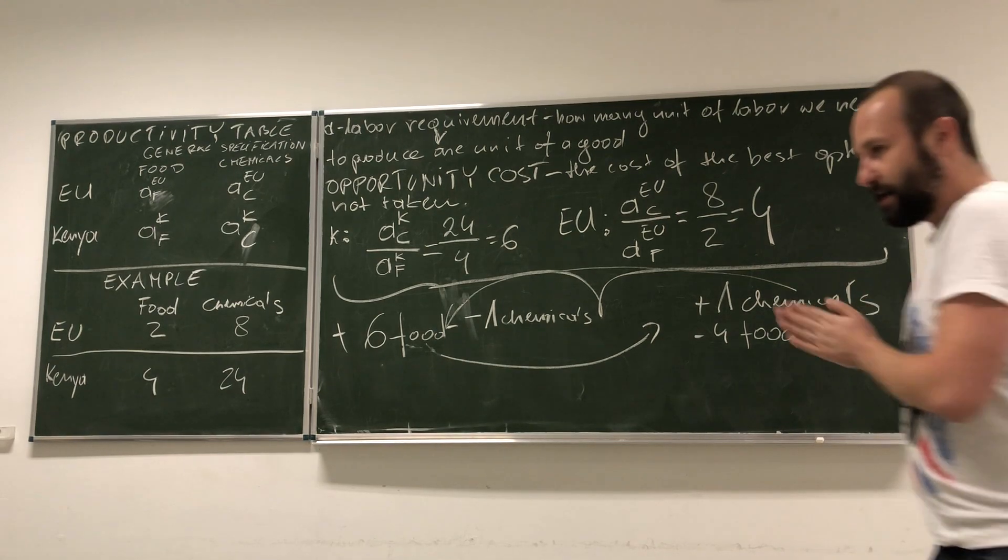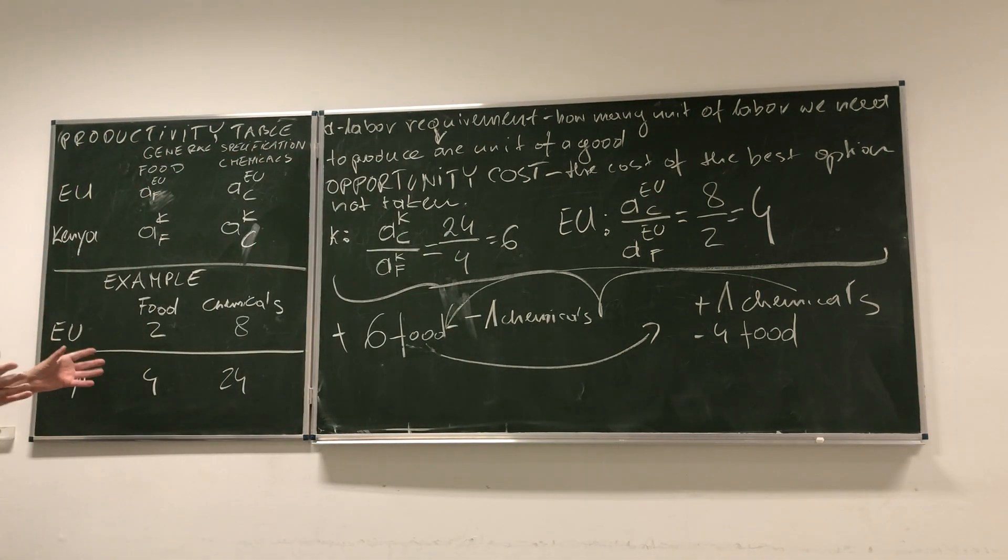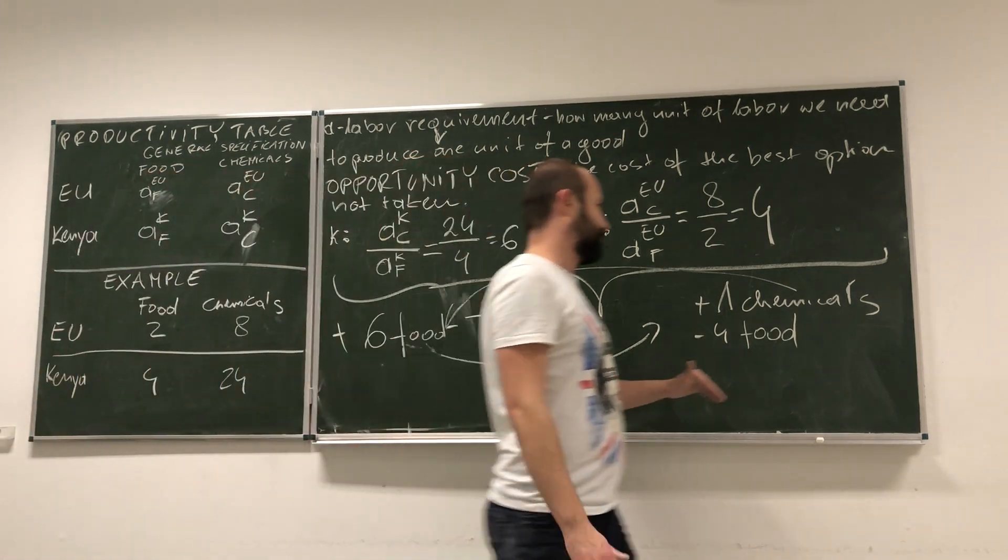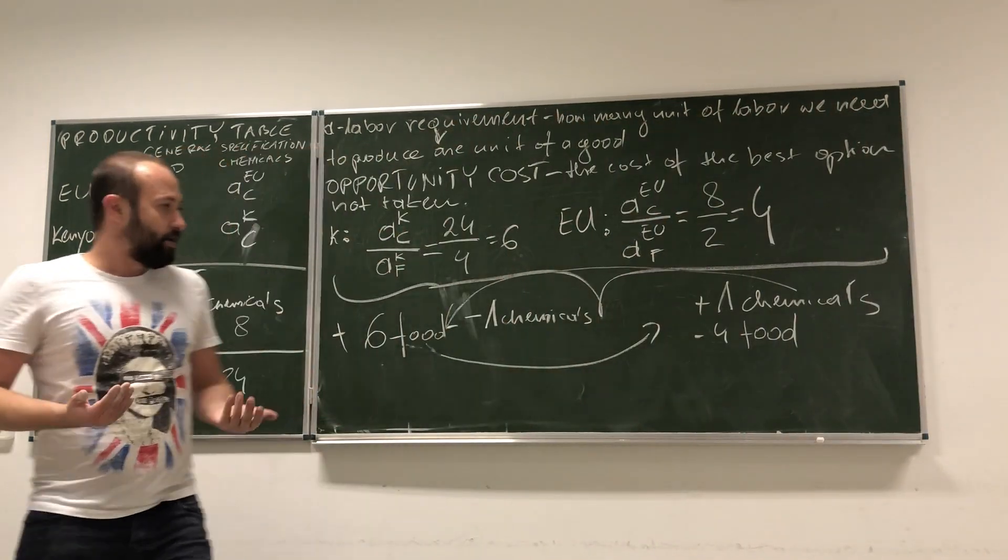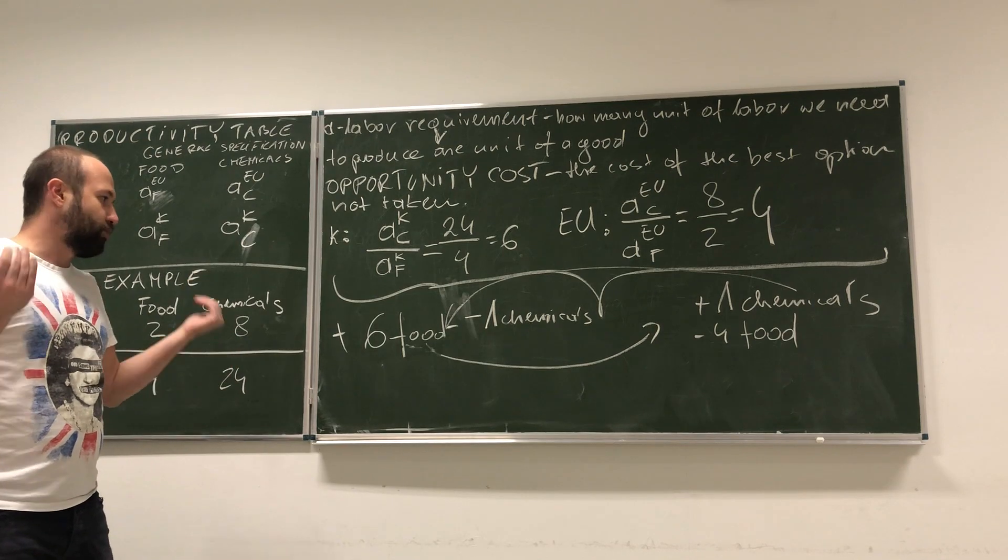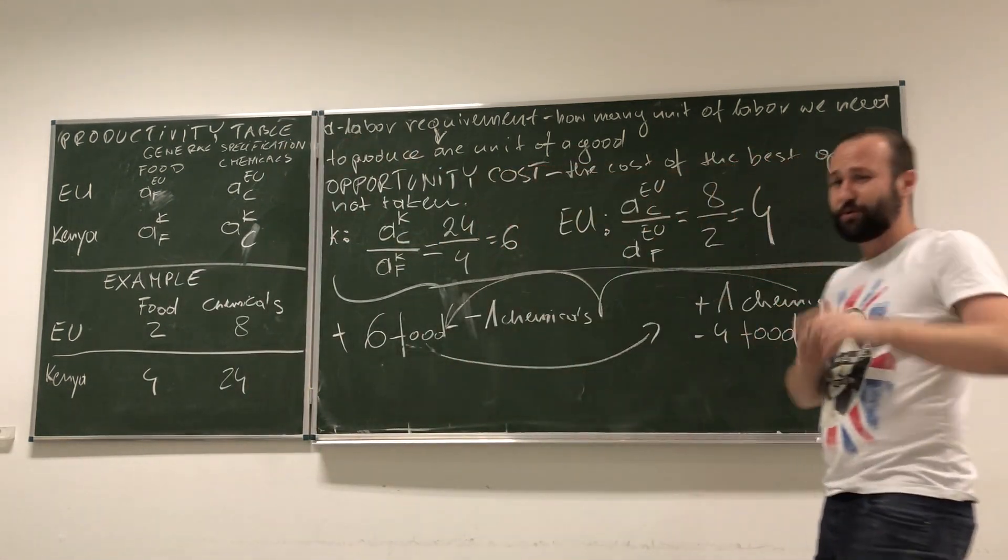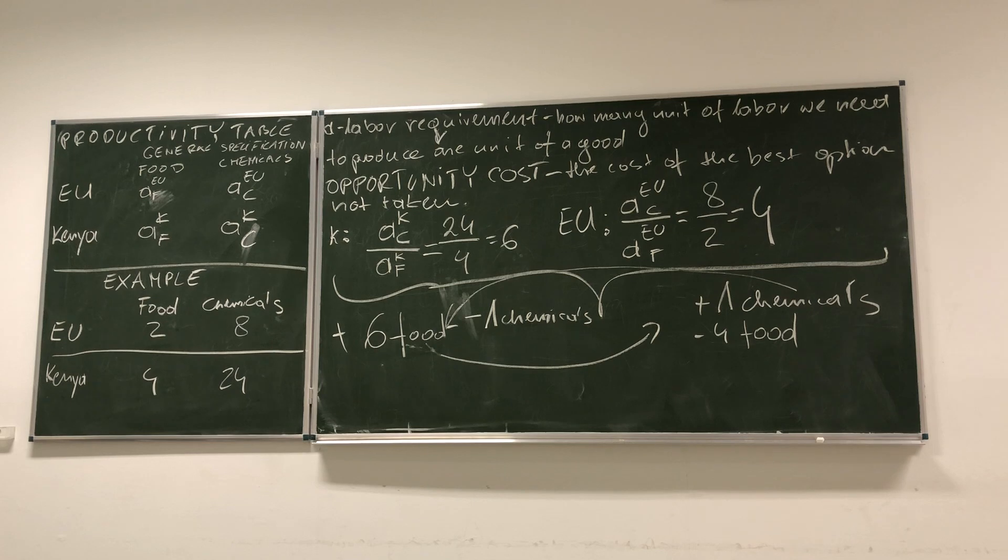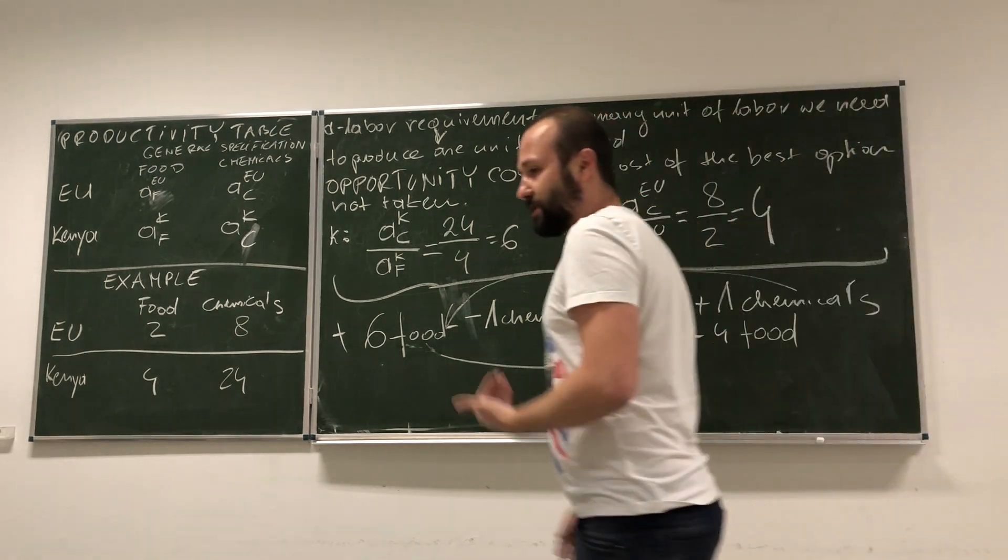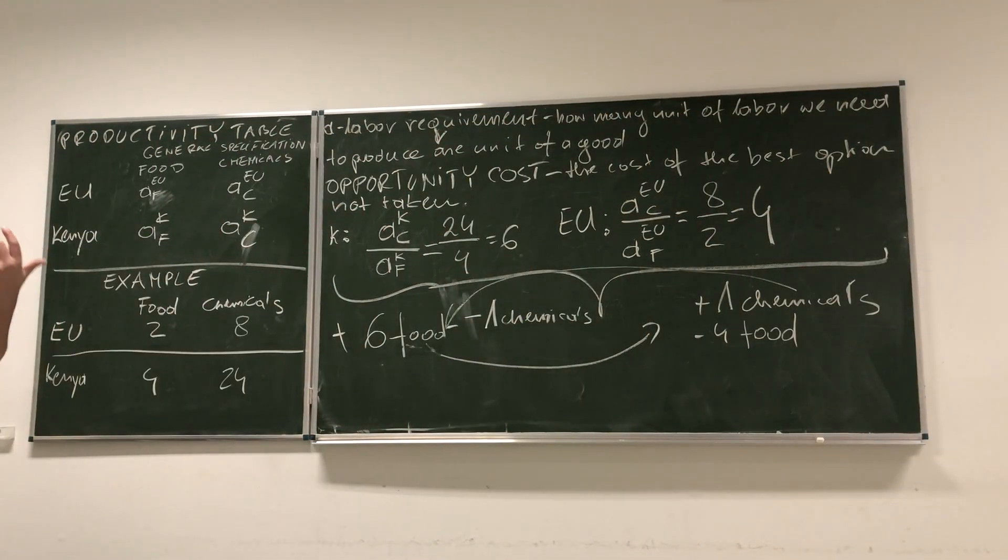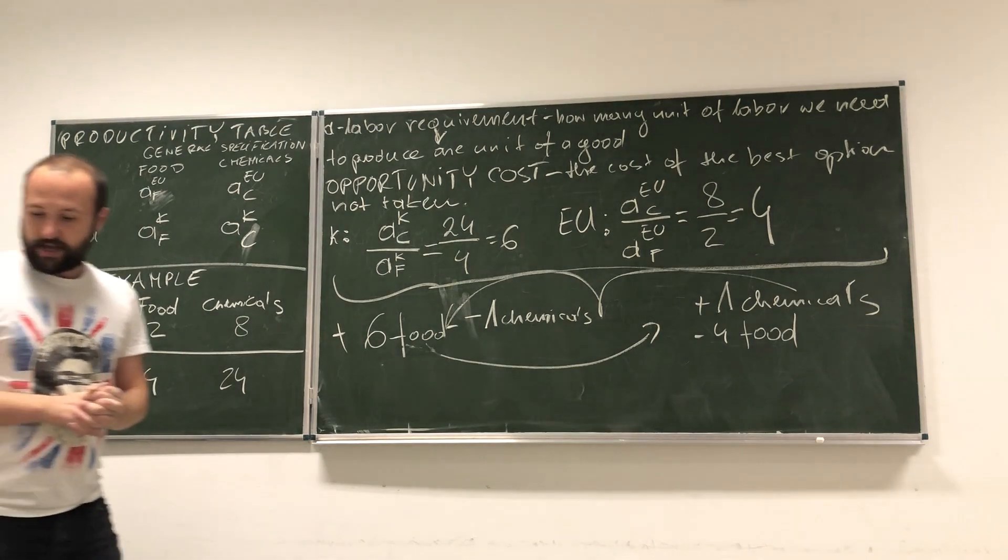This is why EU can specialize in something that is far better than Kenya. And Kenya can specialize in what Kenya is doing, in food. Even though, technically, we could do better in EU, but we could get more by simply hiring more people to deal with chemicals. And because the world production increased, now we can also expect that there will be higher welfare. Like, it depends on what the terms of trade will be between those two countries, but this one we will discuss later. Of course, the division of this additional welfare will be slightly different. But the most important thing here is that because now we have more, in general, we can say the world welfare has increased.